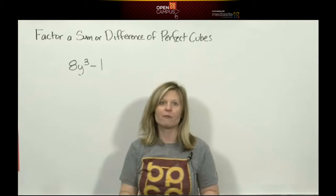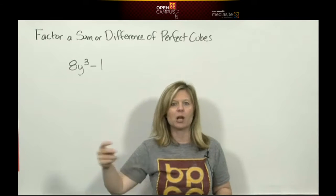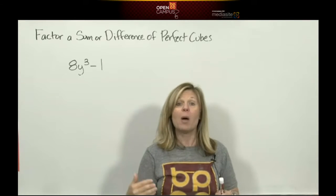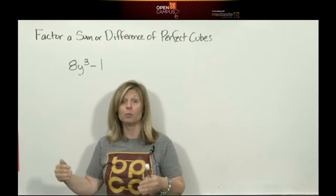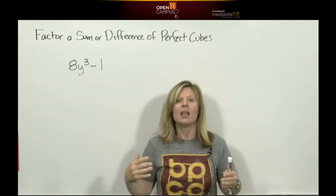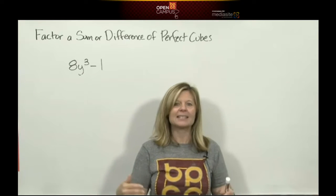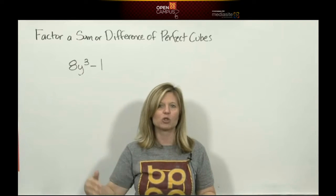Well 8 is a perfect cube. It's 2 times 2 times 2. 1 is a perfect cube. It's 1 times 1 times 1. So you have to memorize your perfect cube list. Thirdly, for a variable to be the perfect cube it has to have an exponent that's a multiple of 3.